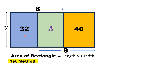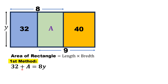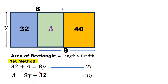For Method 1, consider the rectangle formed by the blue and green regions. Its area is 32 plus A, its length is 8 units, and its width is y units. So we have: 32 + A = 8y. This is equation number 1. From here, we can separate A: A = 8y − 32. This is equation number 2.